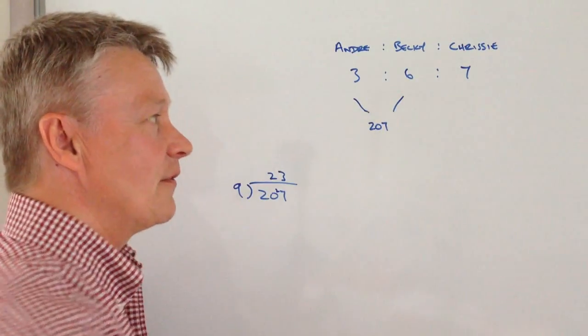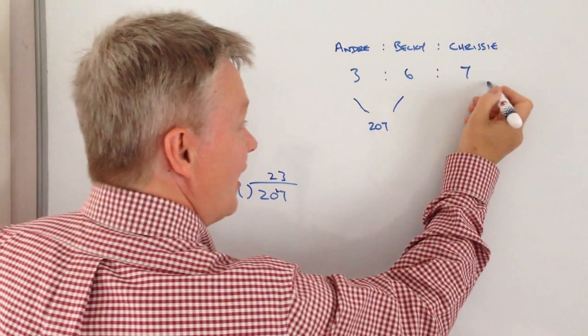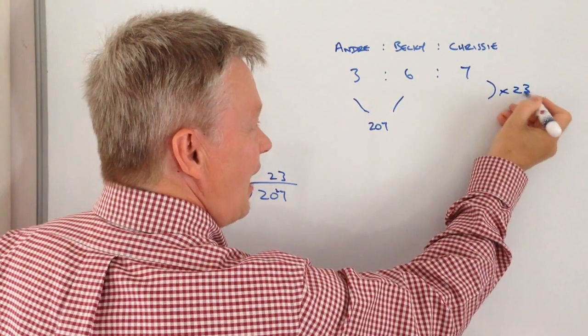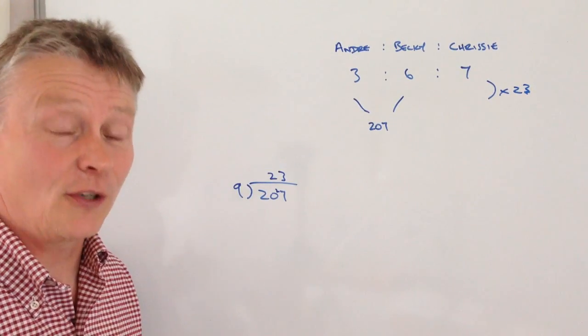However, the important thing for the purposes of this question is that Chrissy is going to get 7 times 23. She's going to get 7 lots of £23.